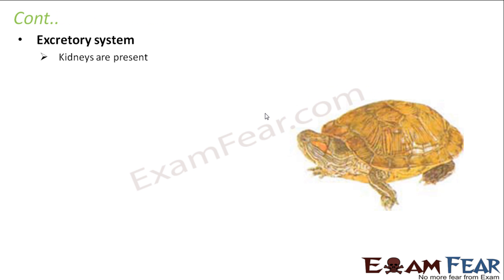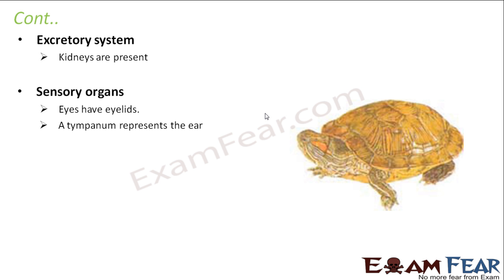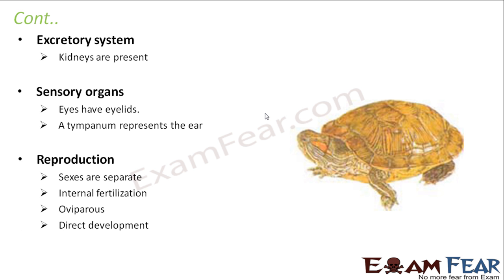Talking about the excretory system and sense organs — they have eyelids and a tympanum is also present, which represents the ear. For reproduction, sexes are separate. Internal fertilization takes place, meaning fusion happens inside the body. They are oviparous — they lay eggs. Development is direct, meaning there is no larval stage involved.